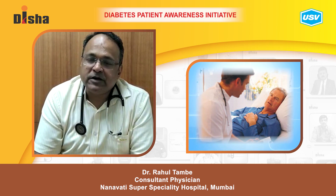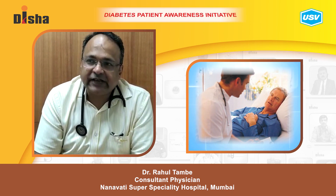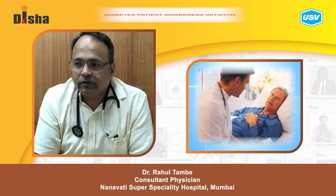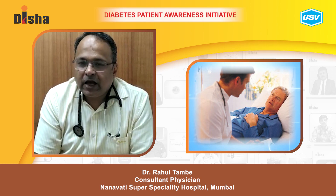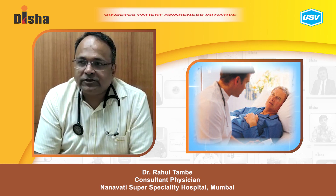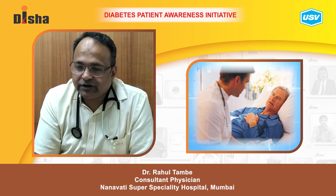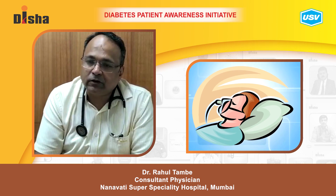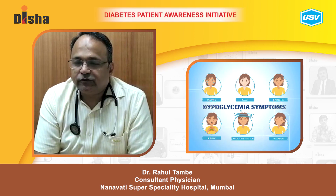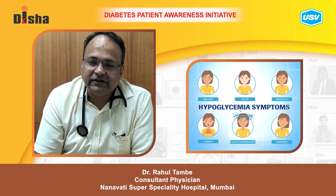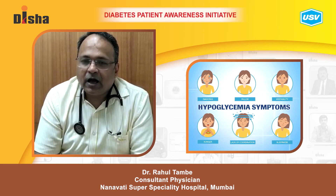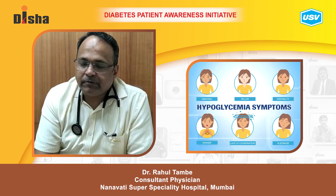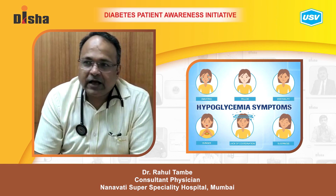Any diabetic patient should be aware of the early signs and symptoms of a fall in blood sugar levels to prevent further complications. Remember that your brain can only function in the presence of glucose as a source of energy, so if sugar goes very low, a person can become unconscious or comatose. Early signs of low blood sugar include discomfort, uneasiness, sweating, change in sensorium, dizziness, disorientation, inability to recognize nearby people, and vomiting.